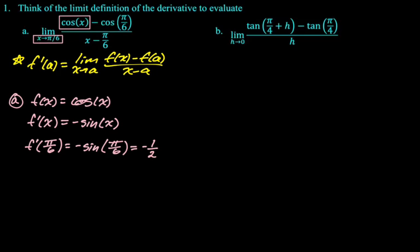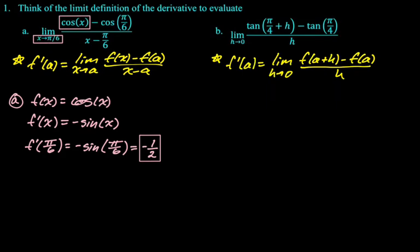All right, for the next one it looks a little bit different. We have that limit as h approaches 0. I would say in calculus, when you see a limit as h approaches 0 you should immediately think definition of the derivative. So this is going to be f prime of a is the limit as h approaches 0, f of a plus h minus f of a all over h. So what's the function, what's the derivative, and where are we evaluating it?